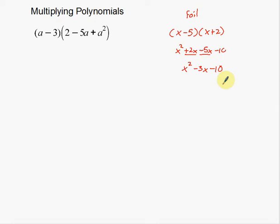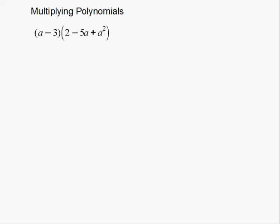This is actually the exact same process of what I'm about to do, except foiling is a little bit easier. This is harder because we just have more to multiply. So that's some back story there. Now let's get on to our actual example. I'm going to take this example and show you the different multiplications that I'm going to do.